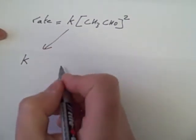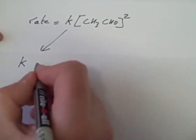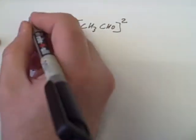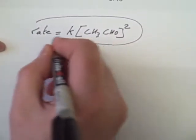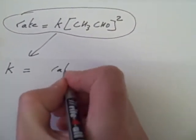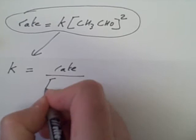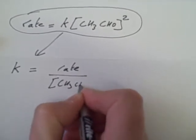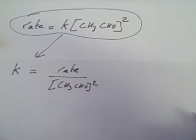Now the second part is to calculate the value of K, which of course is the rate constant. So I've just got to rearrange this equation to make K the subject. So K will be equal to the rate divided by the concentration of my ethanol. Remember of course that it's squared.